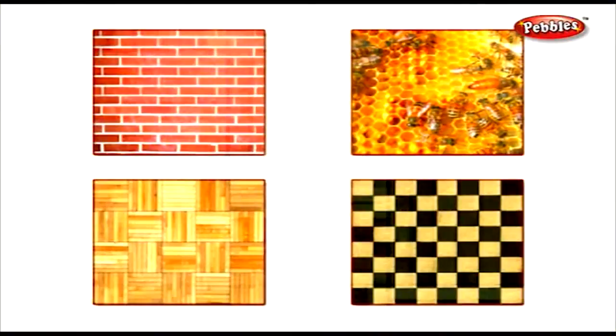Now we are going to see something called tiling. When you go to your house and look at the floor, you find tiles stuck on the floor. These tiles are not overlapped and there are no gaps in between them. A tile pattern is formed without any gaps or overlaps. Can you see pictures in your book? We have a brick wall, a chess board, a beehive, and floor tiles — all formed by arranging different tiles without gaps and overlaps.